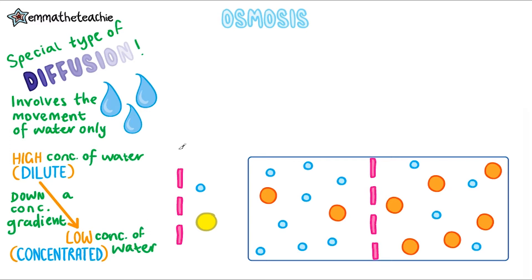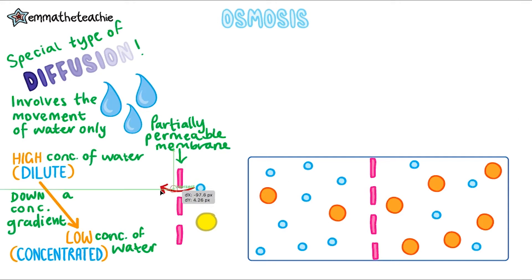An important part of osmosis is that it happens through a partially permeable membrane. This is a membrane that has tiny holes in it, so only very small molecules, like water, can pass through. But bigger molecules, for example sucrose, can't pass through because they get stuck. Most cell membranes are partially permeable.